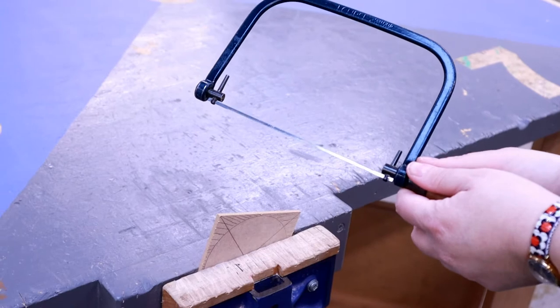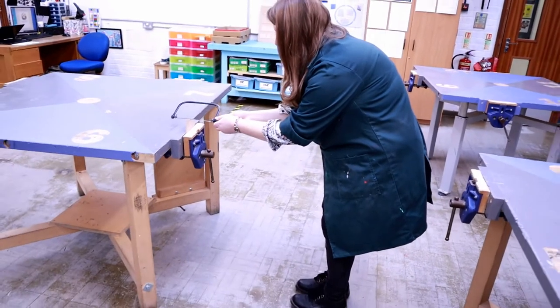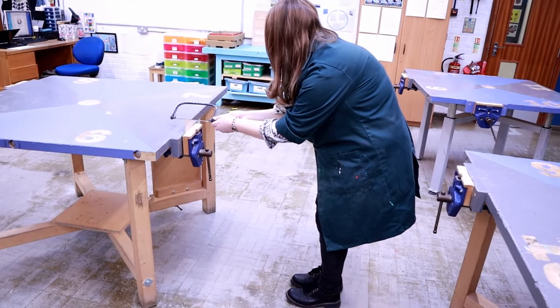You hold the saw with two hands, and you need to ensure that your feet are together and bend your knees so you can come down and look at the work.